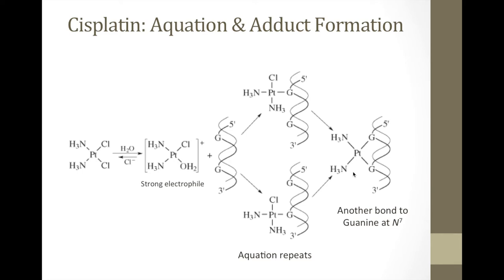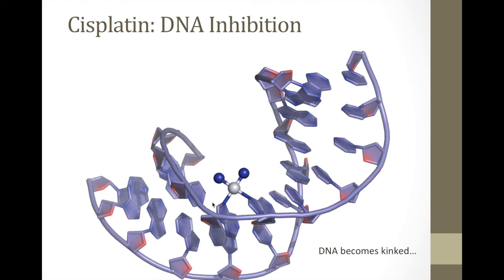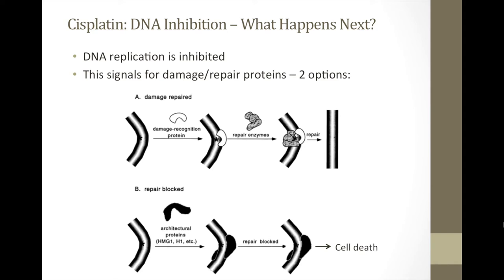These platinum-DNA bonds are very strong, and this is important because the DNA is effectively inhibited. This causes a large kink in the major groove of the DNA, with bending of up to about 40 degrees in the DNA structure. Since these bonds are so strong, it makes it hard for damage and repair proteins and enzymes to remove cisplatin. So ultimately there are two options: the DNA is repaired by removing cisplatin — leaving the cancer-encoding DNA unharmed — or the repair is blocked, repair proteins fail to work, and signals are sent for cell death.